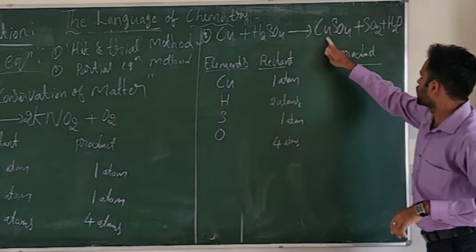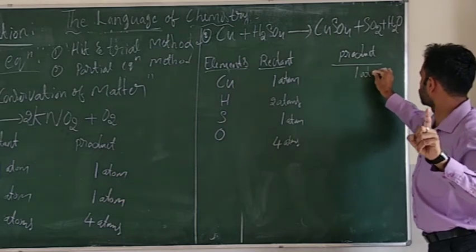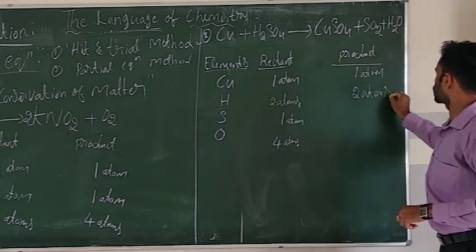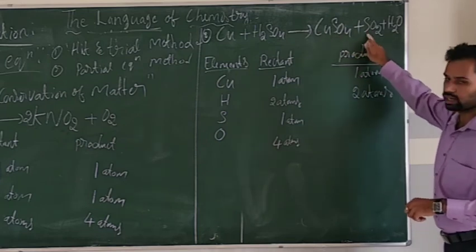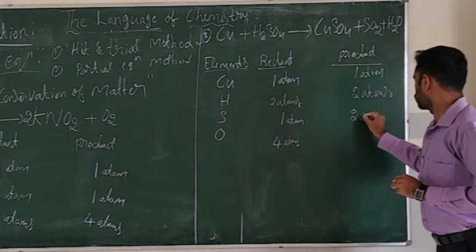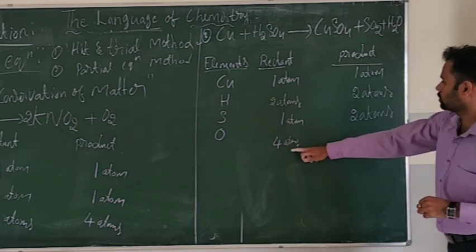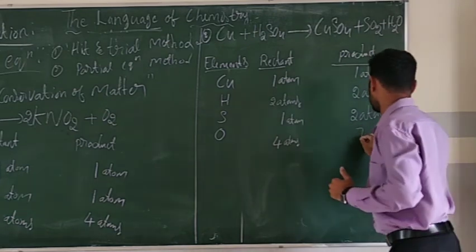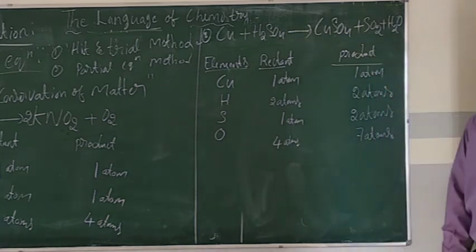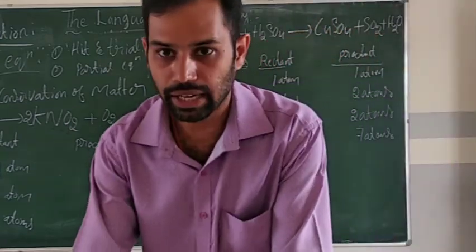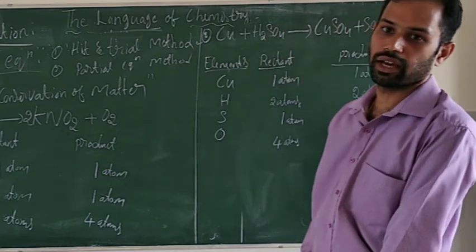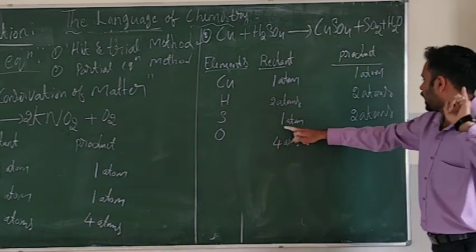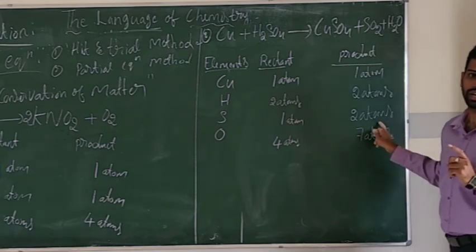After putting 2 on the H2SO4: sulfur becomes 2 on both sides — balanced. But hydrogen changes to 4, and oxygen changes to 8 on reactant side. On the product side, O=4+2+1=7 and H=2. So hydrogen and oxygen are still unbalanced.